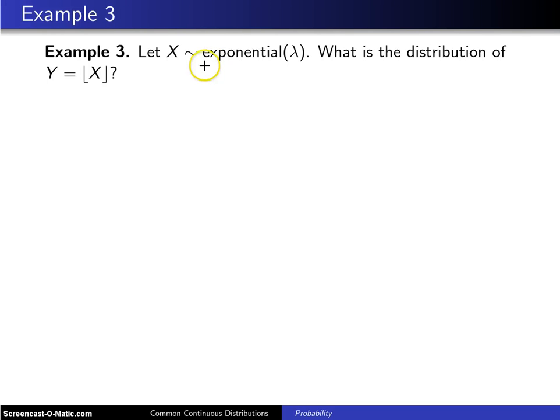Let x be an exponential random variable with parameter lambda. What is the distribution of y, which is the floor of x? There are two random variables in this problem. One is x, the other is y.